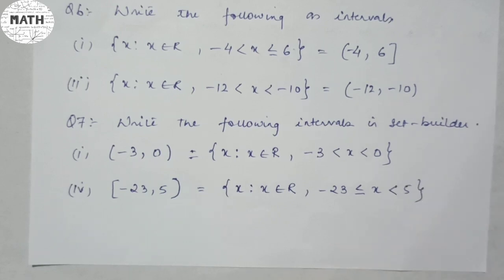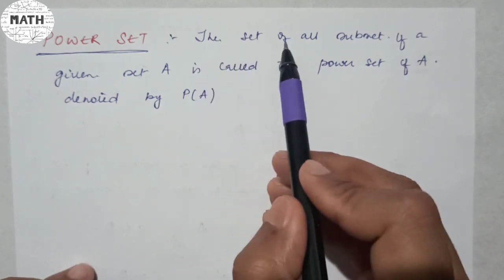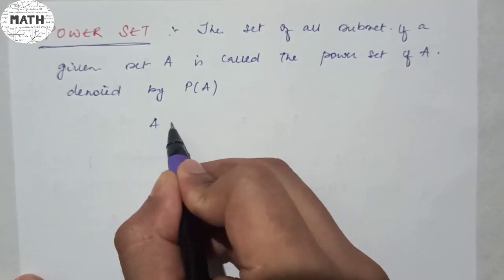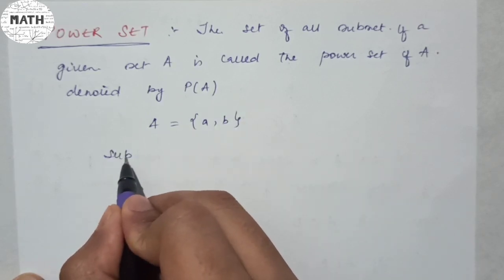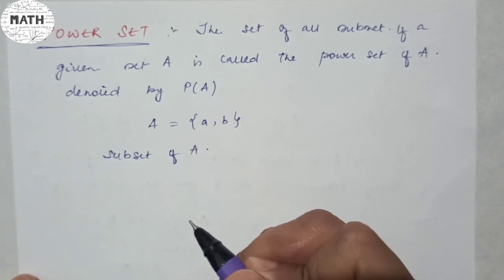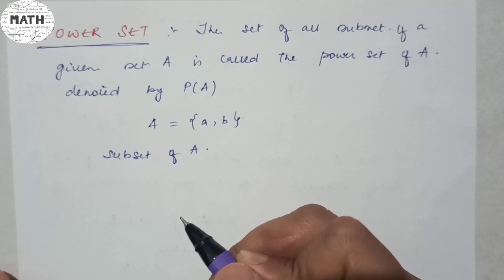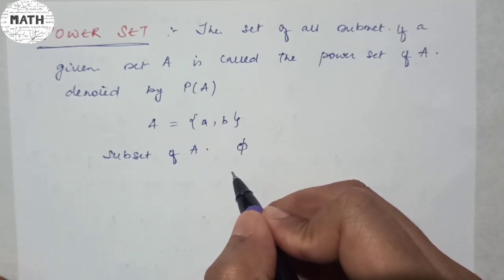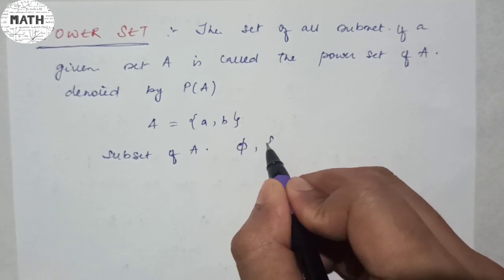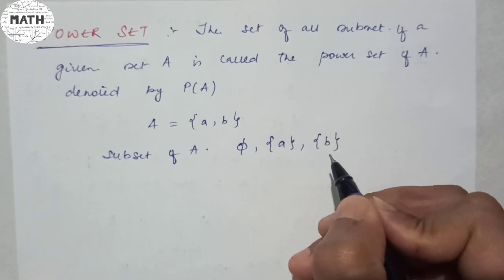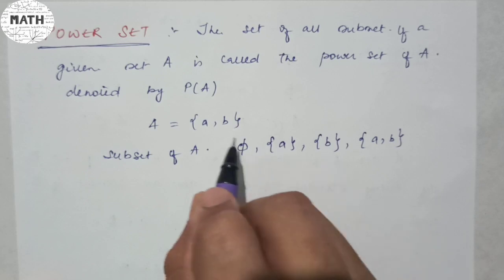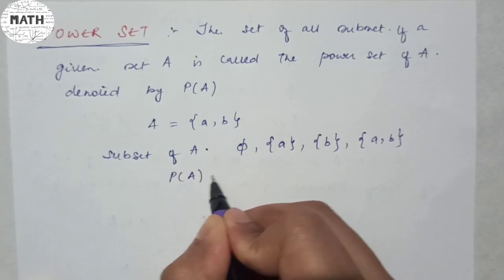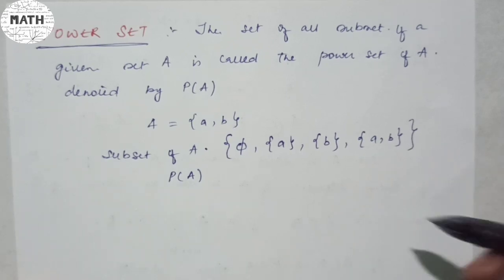The next topic is about your power set. The set of all subsets of a given set A is called the power set of A, denoted by P(A). Suppose A is equal to {a, b}. The subsets of A are: first, phi — the empty set is always a subset of any set; then the singletons {a} and {b}; then both {a, b}. So the power set P(A) is the set of all these subsets.